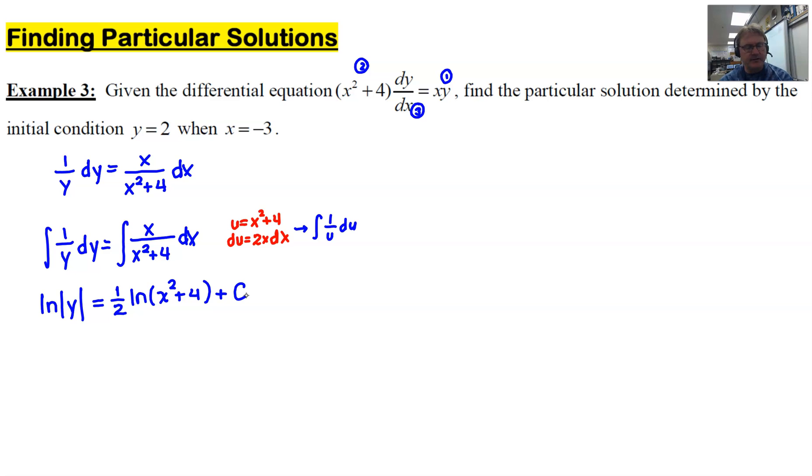And one way to do that is to find the value for c. So we're going to switch modes here. We're going to use this initial condition, this ordered pair. Notice this ordered pair is presented in a very sneaky way. They put the y value first and then the x value second. So make sure that you have that in the right order. And we use that to find c.